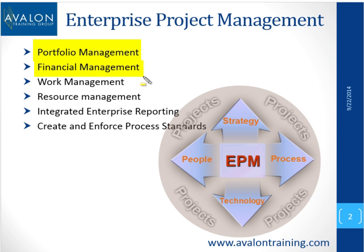Financial management covers the costing side of conducting a project and trying to manage forecasted costs against actual costs. Then we have work management and resource management, which really go hand in hand. With resource management, we want to know what the workload of our resources is — who's doing what, when, and where. Work management is making sure we get good estimates on the work that needs to be done, because good estimates allow us to get a better idea of resource utilization.